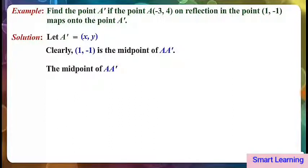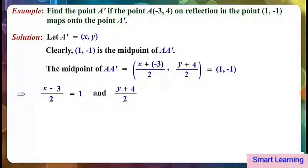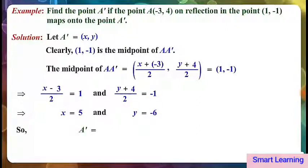The midpoint of A A dash is equal to x plus minus 3 by 2, comma, y plus 4 by 2, which equals 1 comma minus 1. This implies x minus 3 by 2 is equal to 1, and y plus 4 by 2 is equal to minus 1. This implies x is equal to 5 and y is equal to minus 6. So A dash is equal to 5 comma minus 6.